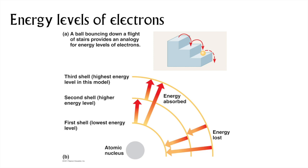Back to electrons. These little negatively charged particles are in constant motion around the nucleus, like fan blades. The paths that the electrons follow are called orbitals or orbital shells, kind of like the moon orbits the earth or the earth orbits the sun. But unlike planetary orbits, which are two-dimensional like a disk, electron orbitals are three-dimensional, like a ball.